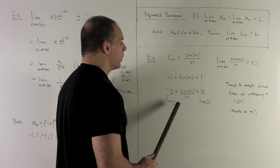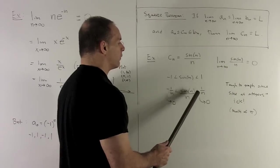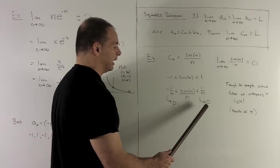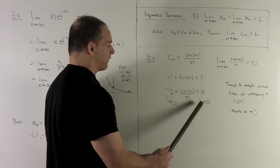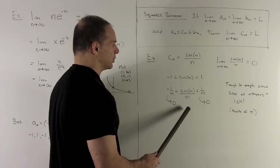Minus 1 over n is going to go to 0, as we go to infinity. 1 over n is going to go to 0 as we go to infinity. So our sine of n over n is also going to have to wind up going to 0 as we go out to infinity.